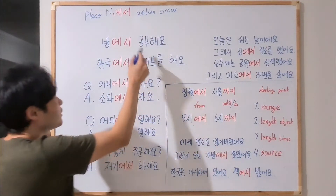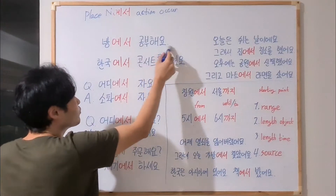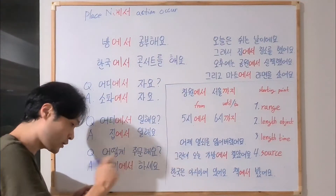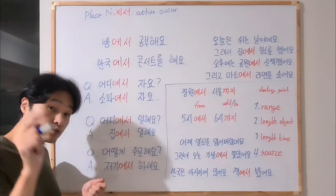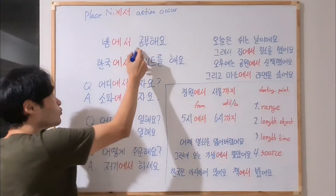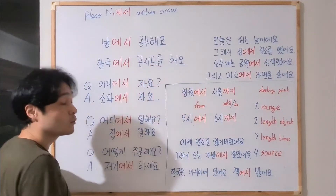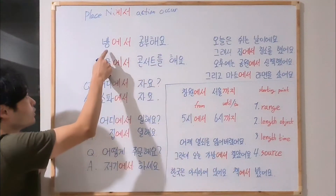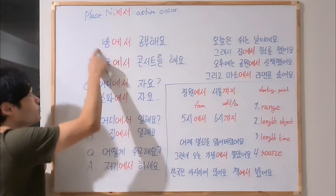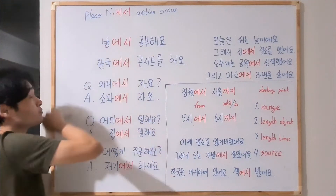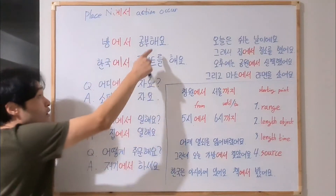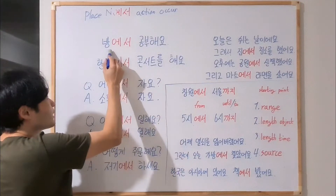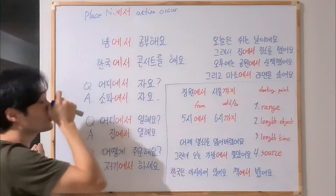For example, 공부해요 — this is the verb action, meaning 'study.' Where? In the room. 방 is the place where you study. So, 방에서 공부해요.